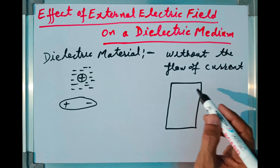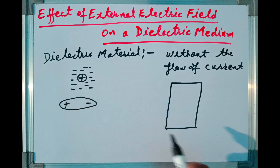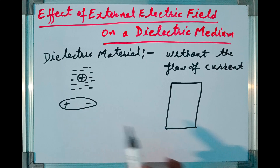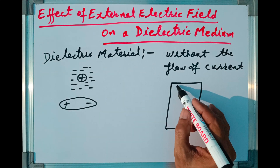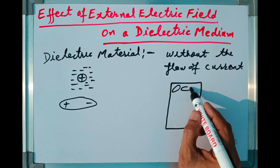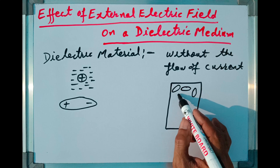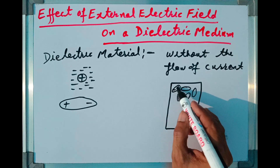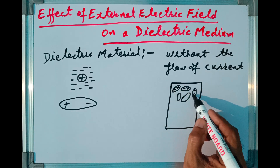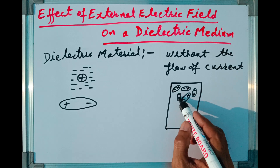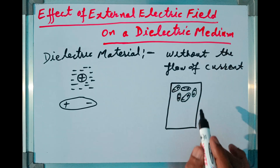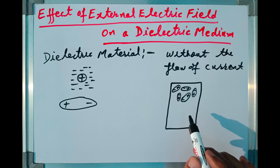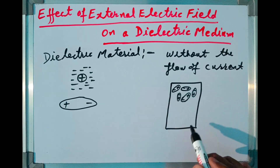Now in general, when no electric field is applied on dielectric material, these molecules behaving as electric dipoles are randomly oriented inside the slab — some molecules are oriented vertically and some at other angles. In this way, we have electric dipoles oriented inside the slab randomly, and the slab is full of such molecules. As a result, net positive charge and net negative charge cancel each other, and the net charge in the slab is zero.